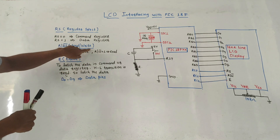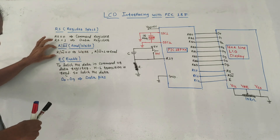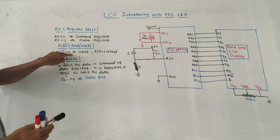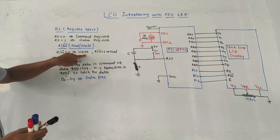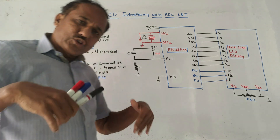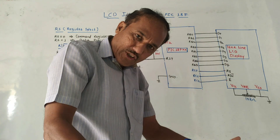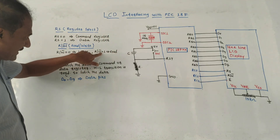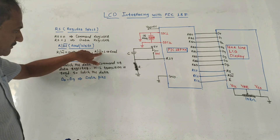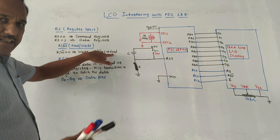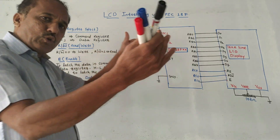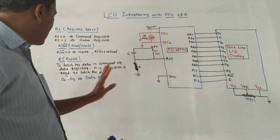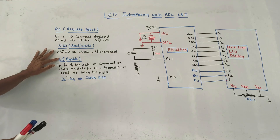The read-write pin is very simple. When this pin is zero, we have to perform a write operation — that means we have to send the data to the LCD for display purpose. Whereas when this bit is one, it indicates we want to read the data from the LCD using the data lines.